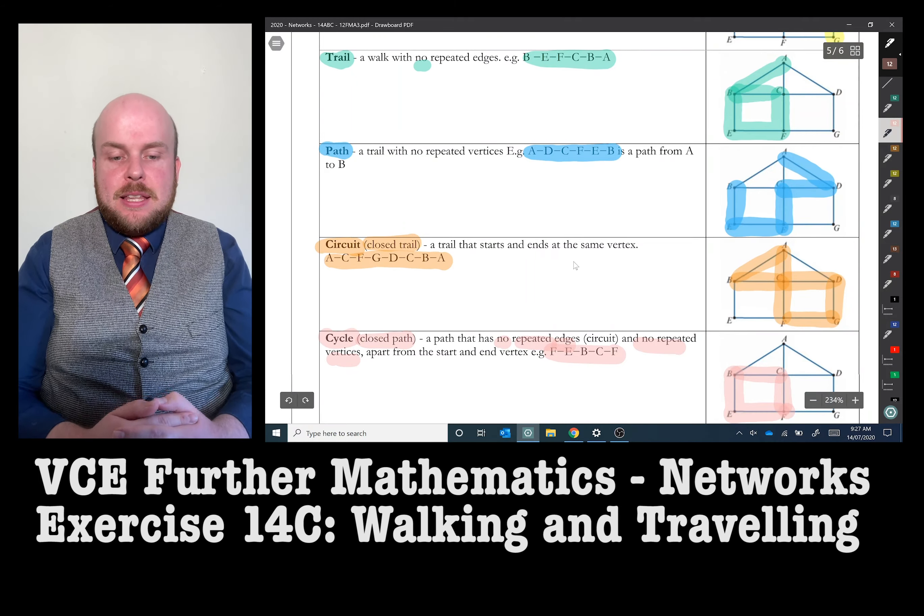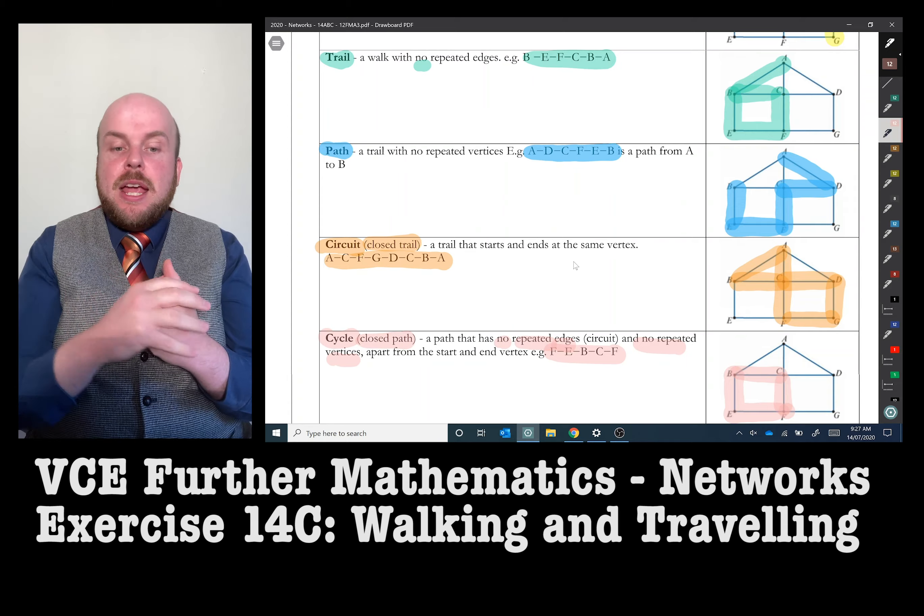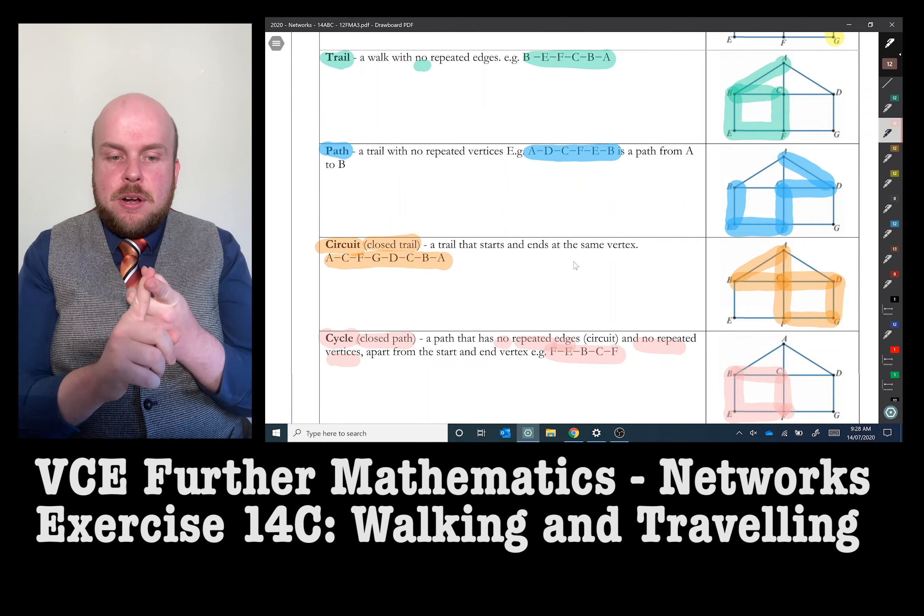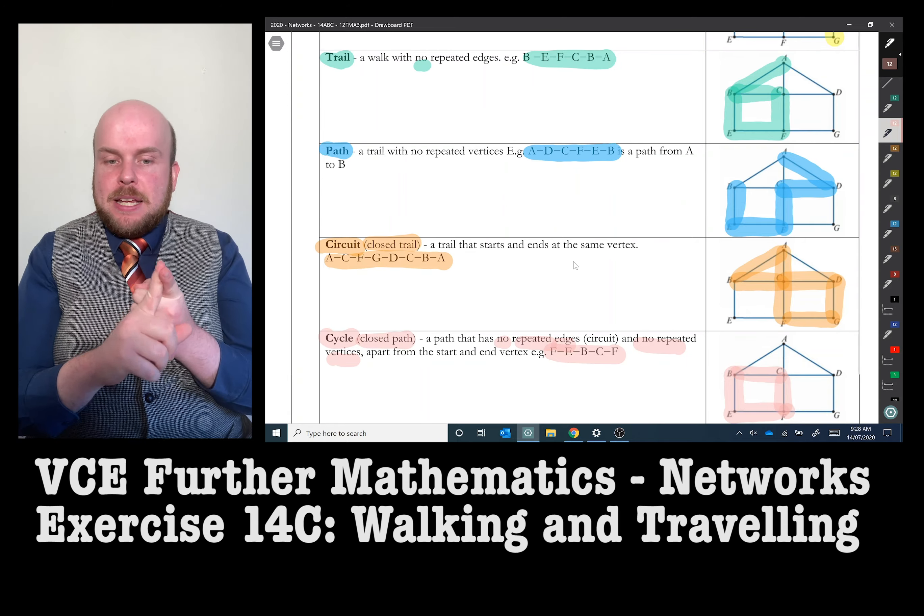So a trail is just a walk that's got no repeated edges, e.g. B-E-F-C-B-A in my image on the right. A path is actually a subset of trails. It's a trail but has no repeated vertices. So it's got no repeated edges and no repeated vertices. So that's A-D-C-F-E-B.